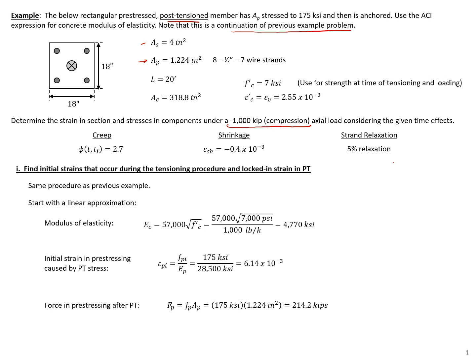We're assuming this 1,000 kip axial load is sustained on the column. We have a given creep coefficient, shrinkage strain, and relaxation in the prestressing strand. We could calculate these using various procedures in the literature and specifications, but I'm giving them here to keep the example briefer. The first step is to find the initial strains during the tensioning procedure to find the locked-in strain in the post-tensioning, using the same procedure as the previous example.